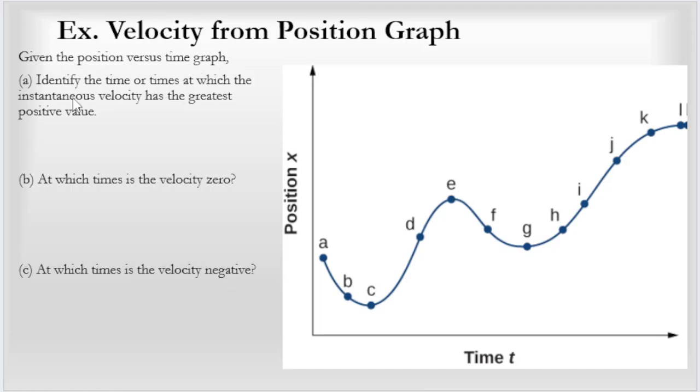Given the position versus time graph here, you can see that this object is doing different things, moving away from its initial and then toward the origin and then away from the origin. It turns around, turns around, and so it has some interesting motion. It asks about what is the velocity at different times. Identify the time or times at which the instantaneous velocity has the greatest positive value.